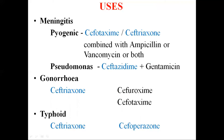For gonorrhea, ceftriaxone is the first choice and even single-dose therapy is sufficient. Cefuroxime (second generation) and cefotaxime (third generation) have also been used for penicillinase-producing Neisseria gonorrhoeae. Ceftriaxone is also used against syphilis. For typhoid, ceftriaxone is currently preferred, given by IV injections; cefoperazone is also useful in typhoid, with both having bactericidal action and fast, reliable efficacy against enteric fever.